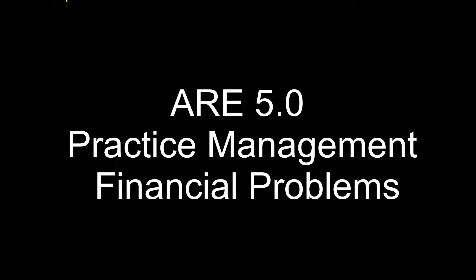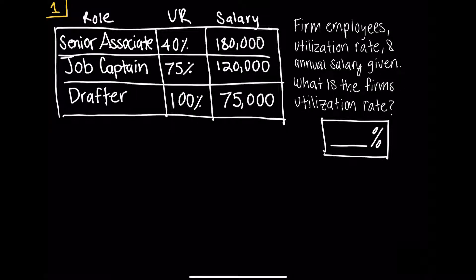Here's a sample problem of utilization rate that might show up in an architecture exam. You'll have a table with potentially roles provided, such as senior associate, job captain, drafter. You might have the utilization rate provided — in this case 40% for the senior associate, 75% for the job captain, 100% for the drafter. And then we have an annual salary provided for each person. To find the firm's utilization rate, you need to know each person's utilization rate, and here it's given as a salary in dollars.